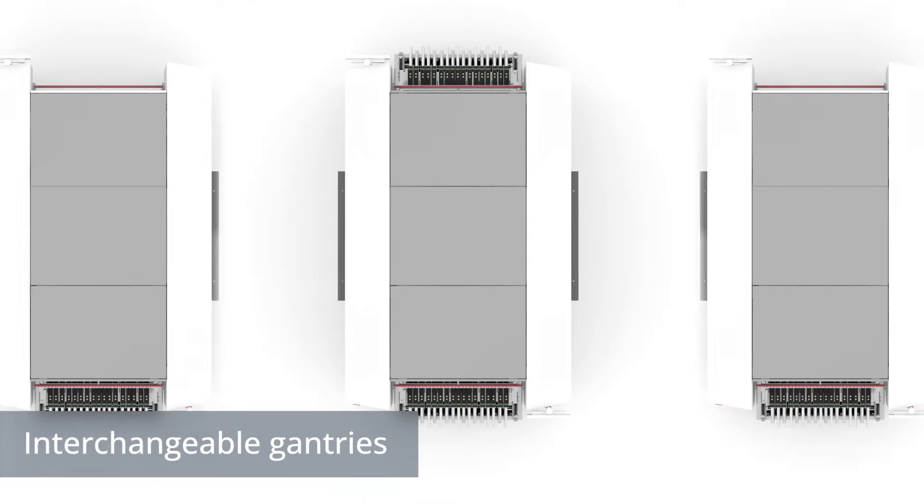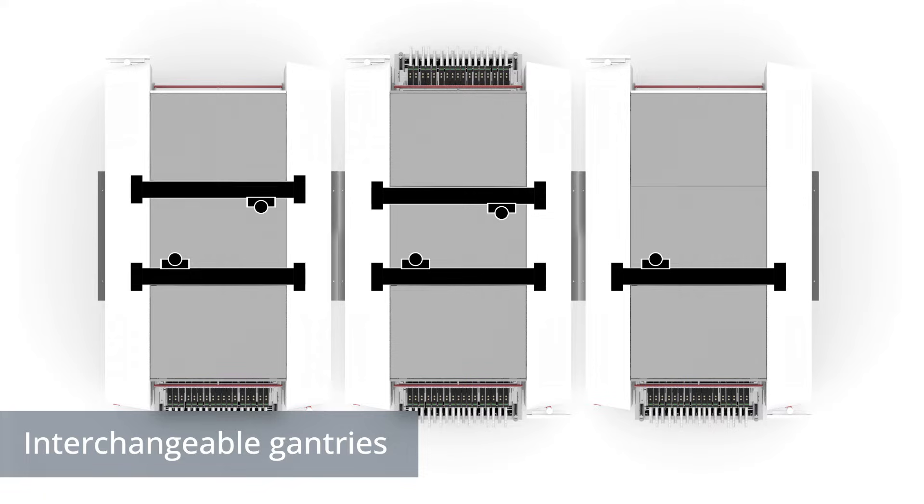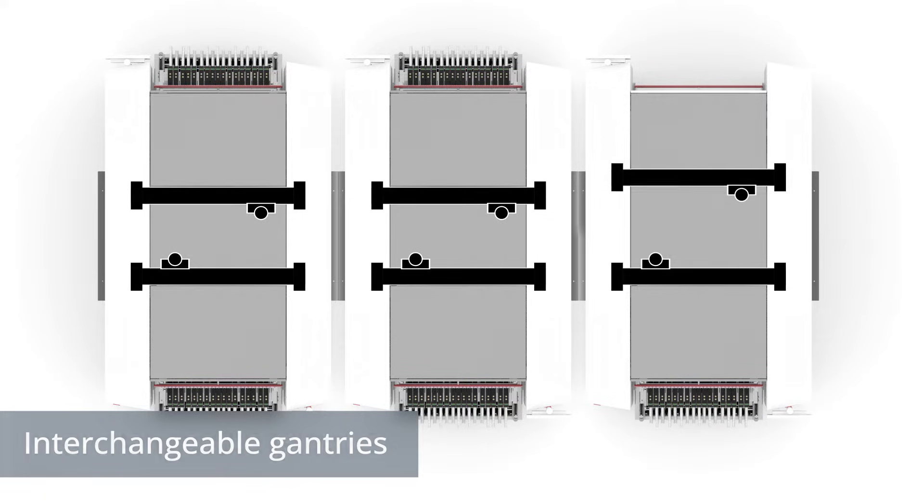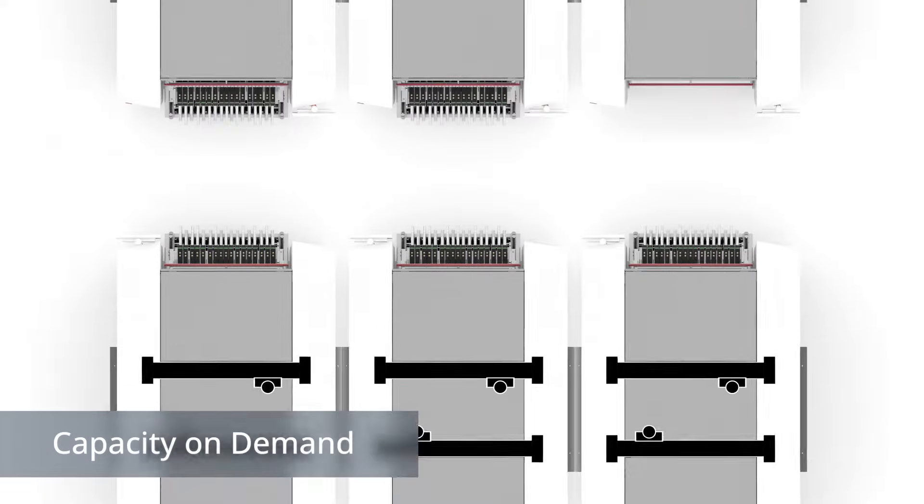When demand spikes, scalability is critical. The C Place SX features interchangeable gantries, allowing you to increase capacity on demand.